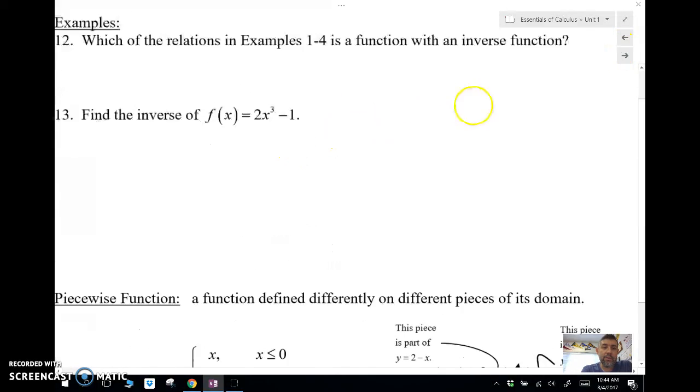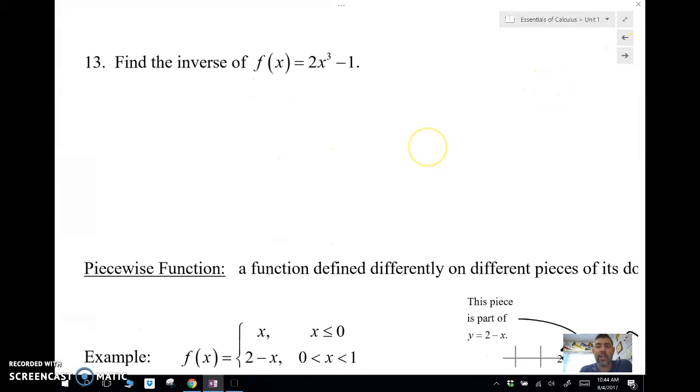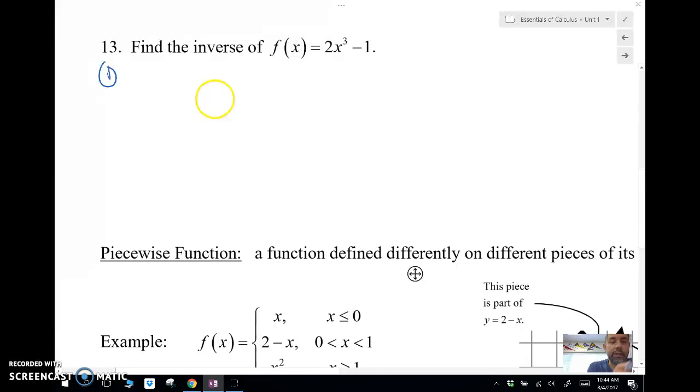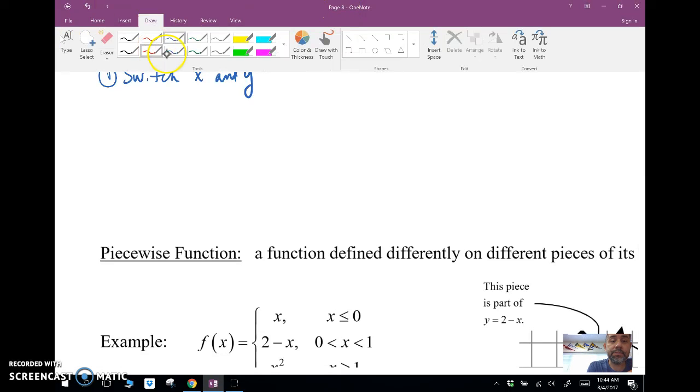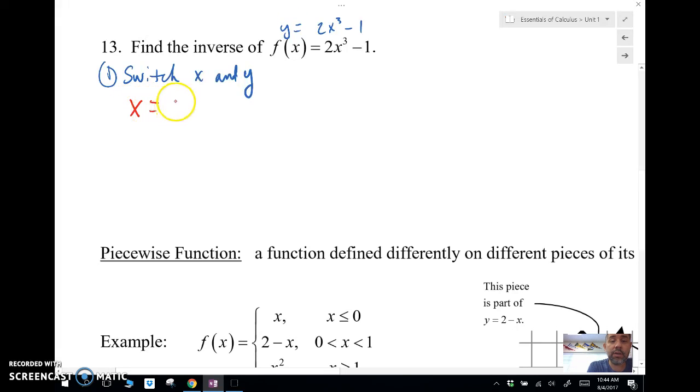So how would we find this algebraically? How do we find an inverse algebraically? What we're going to do is we are going to just switch the x and the y. So our first step is to switch the x and the y. So I'm going to say instead of y equals 2x cubed minus 1, I'm going to say that x equals 2y cubed minus 1.